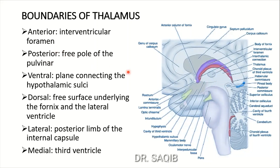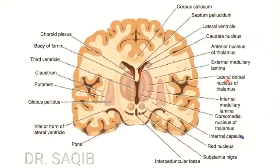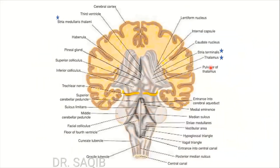Posteriorly, lying in the free pole of the pulvinar. This is the thalamus and the posterior aspect - you see anything above the superior colliculus. This part of the thalamus is the pulvinar. This is the thalamus and this is the pulvinar, which is a nucleus of the thalamus. Very important.